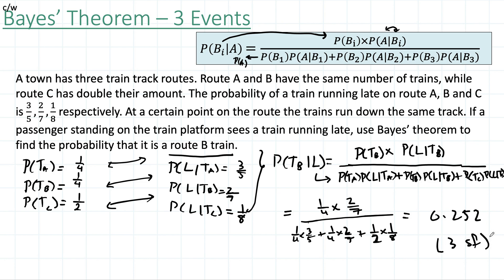So that's it for Bayes' theorem. Hopefully it's clear now how and why we use it. These are questions you could do on a tree diagram or solve differently, but Bayes' theorem gives you a quick shortcut in case you have one conditional probability and you want the other — if you have A given B and you need B given A.